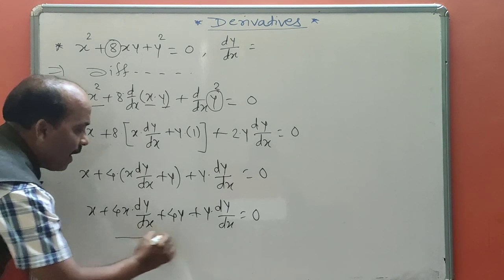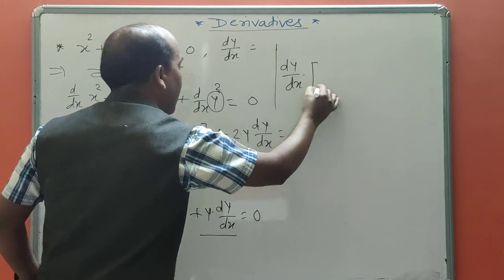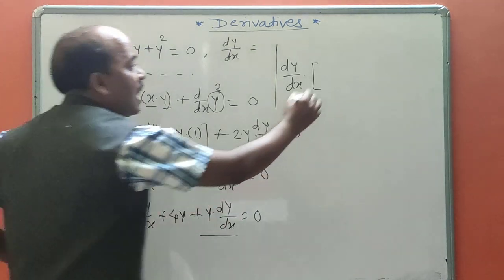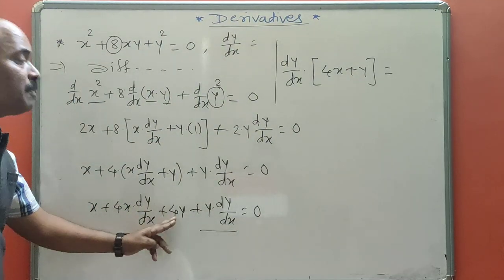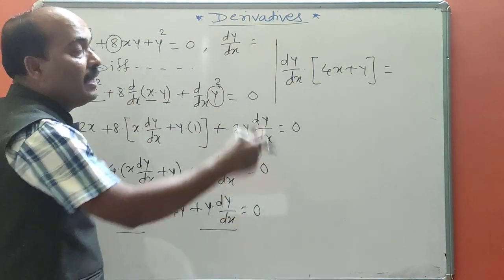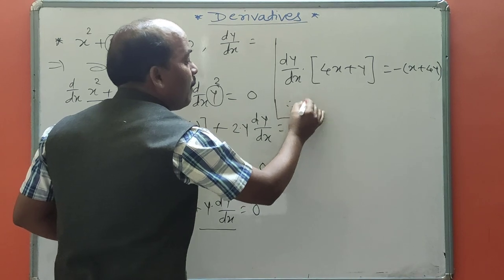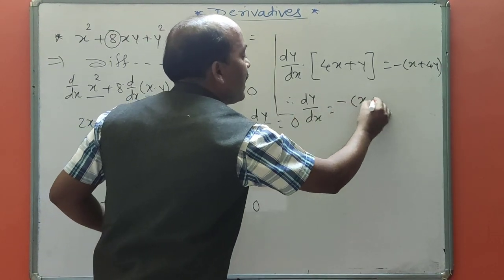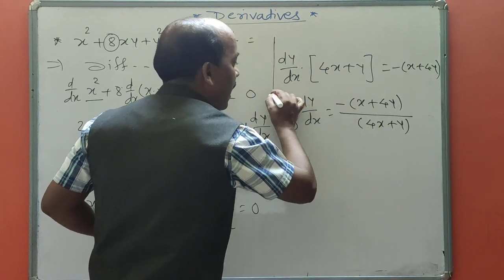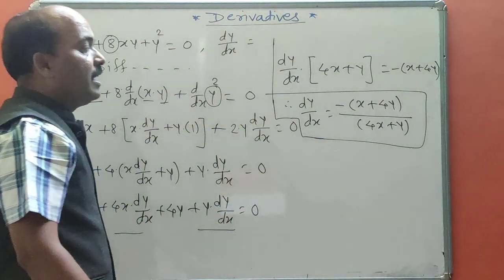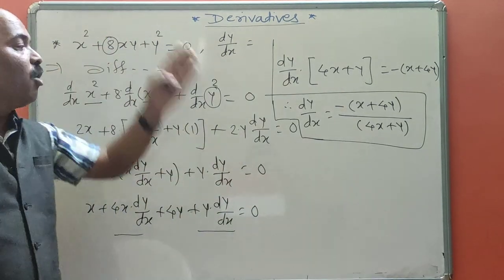Rearranging: the second and fourth terms contain dy/dx. Take dy/dx as common, leaving in the bracket (4x + y). Transfer other terms to the opposite side: minus(x + 4y). Taking minus sign common gives minus(x + 4y). Therefore, dy/dx = minus(x + 4y) / (4x + y). This is the derivative of the given function.